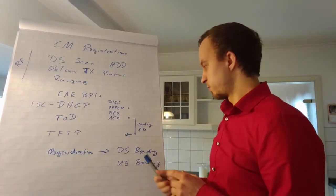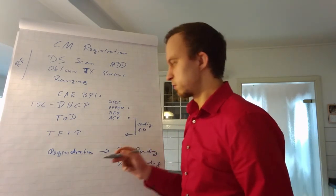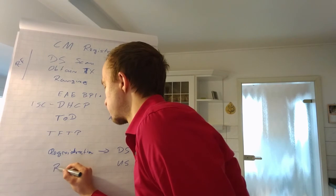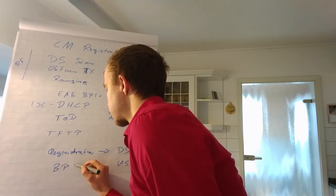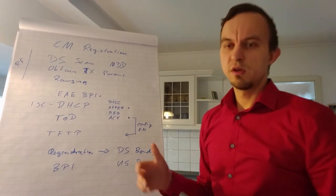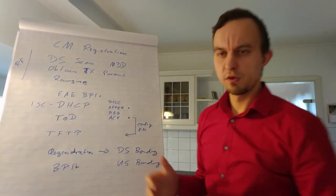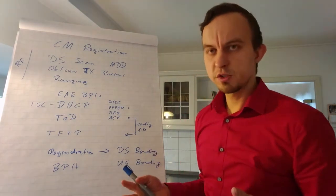Once this has finished, then we go through the normal BPI, which is the Baseline Privacy Interface, and this is some kind of encryption in the forward path. Most of the time it's called BPI+.